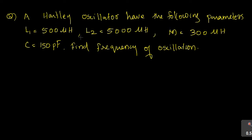Second question on frequency of oscillation: a Hartley Oscillator has the following parameters — L1 = 500 microhenry, L2 = 5000 microhenry, M = 300 microhenry, and C = 150 picofarad. Find the frequency of oscillation. We have L1 = 500 microhenry.